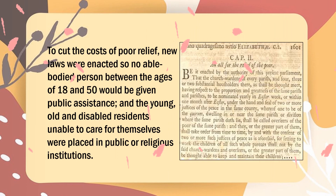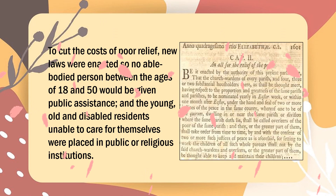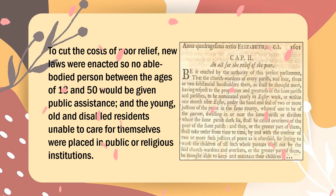To cut the costs of poor relief, new laws were enacted so no able-bodied person between the ages of 18 and 50 would be given public assistance, and the young, old, and disabled residents unable to care for themselves were placed in public or religious institutions.